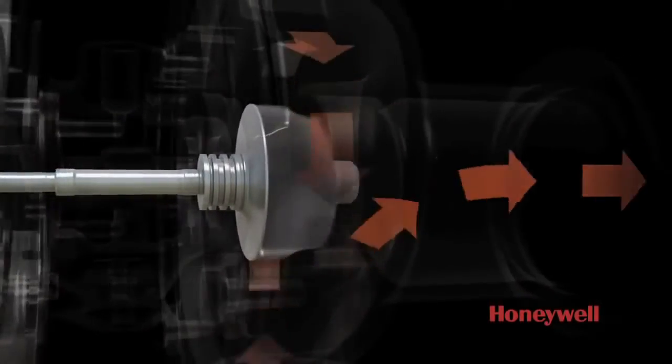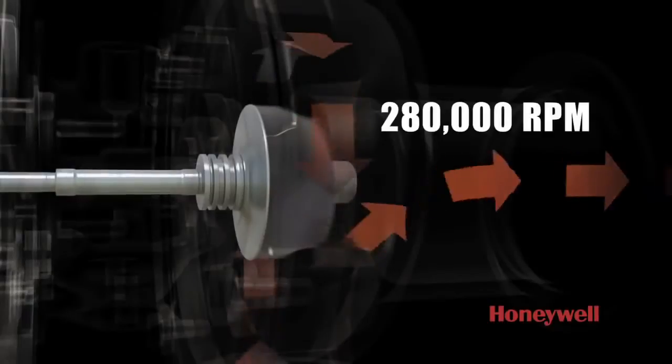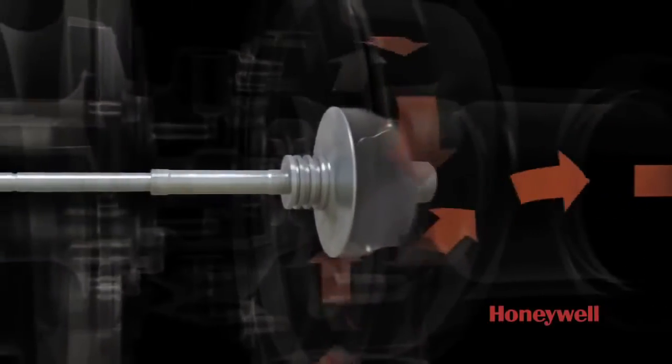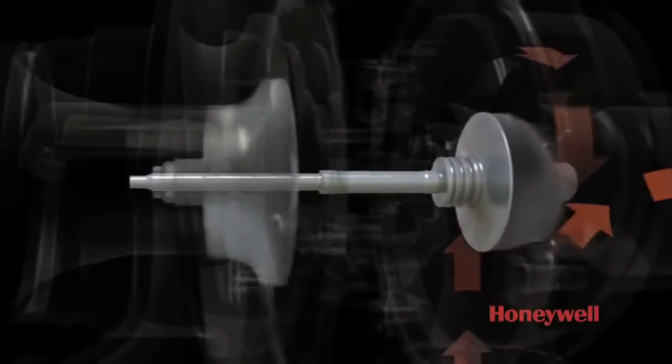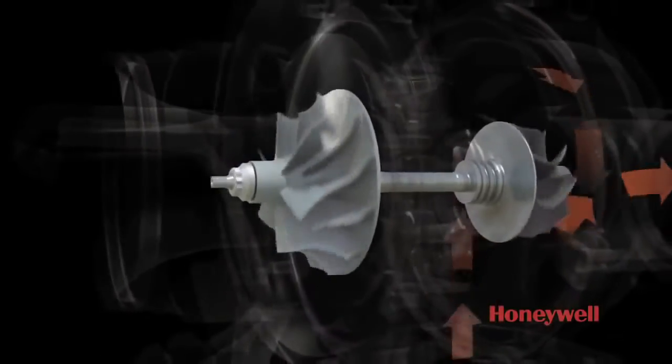This highly engineered wheel spins quite fast, reaching speeds of up to 280,000 RPM. On the other side of the turbine wheel, connected by a shaft, is a compressor wheel.